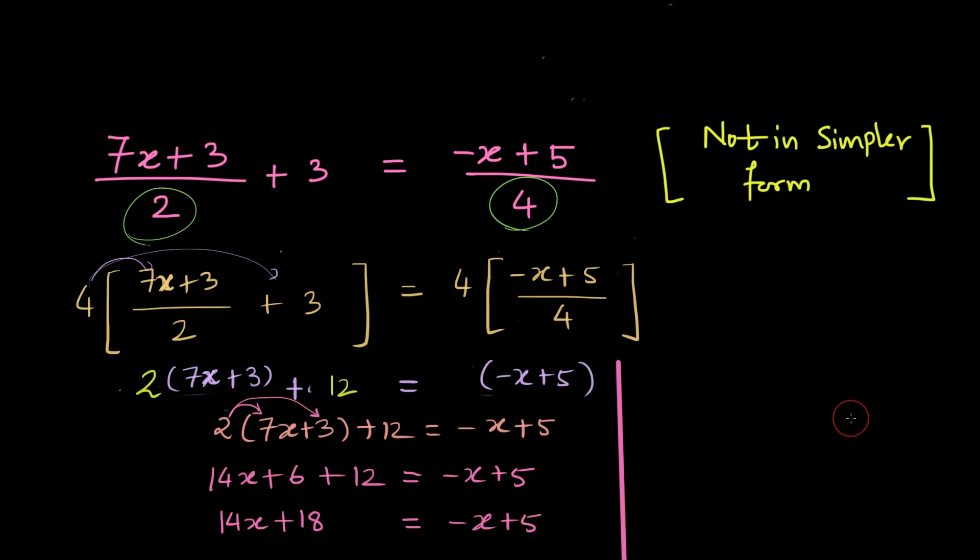To solve this equation now I can transpose this minus x to the left and its sign will change. So 14x plus 18 plus x because I have transposed this negative x to the left and its sign has changed is equal to 5 on the right hand side.